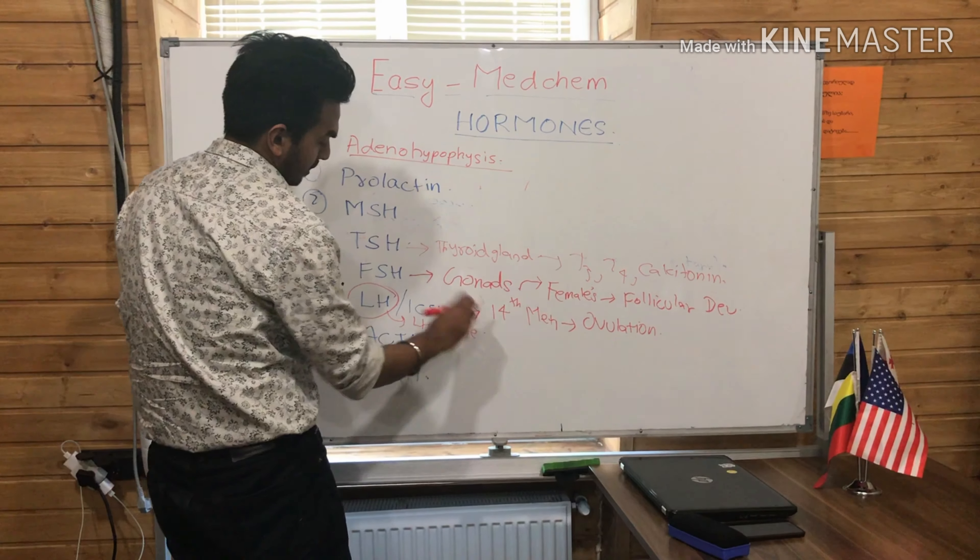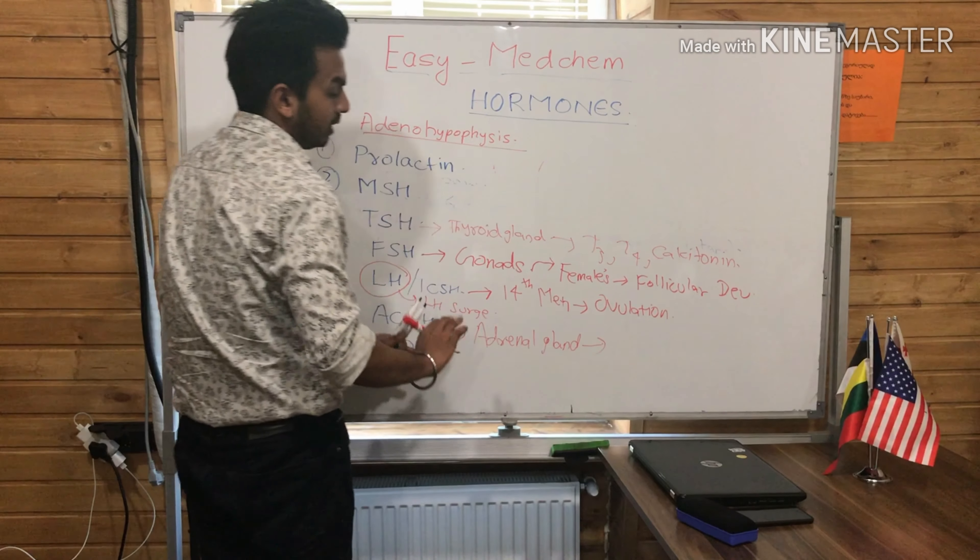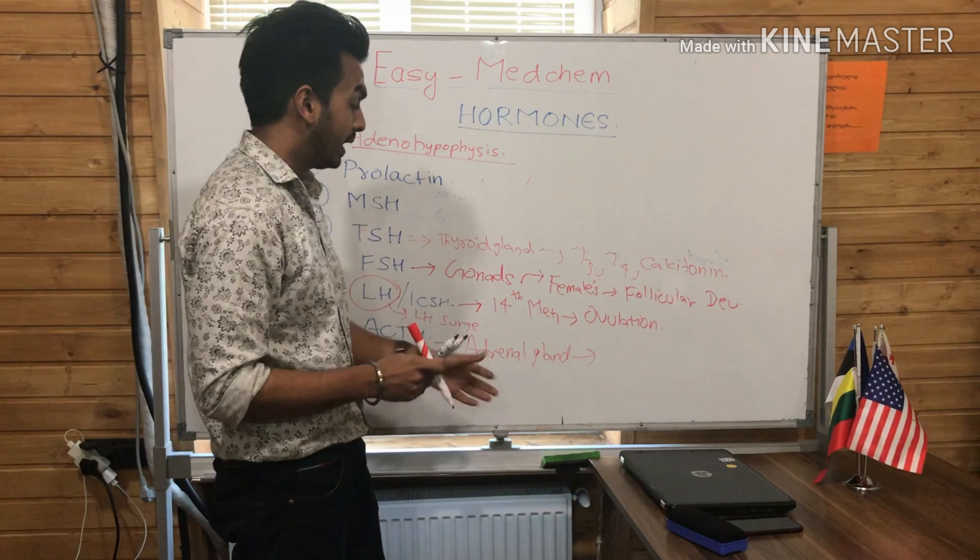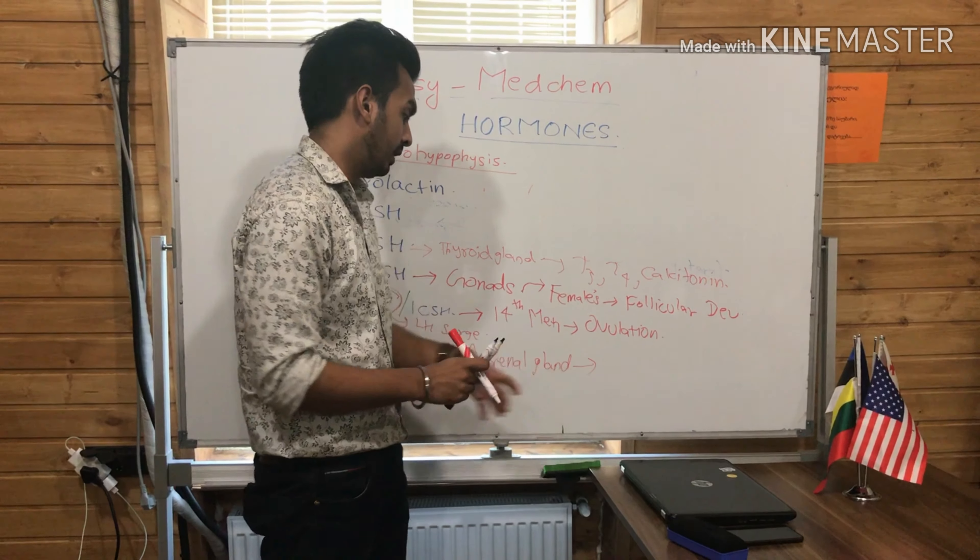This is the Luteinizing Hormone (LH), and in the case of the male, it is also called ICSH — Interstitial Cell Stimulating Hormone. This LH is responsible for ovulation at the 14th day of the menstrual cycle, and this period is called the LH surge.